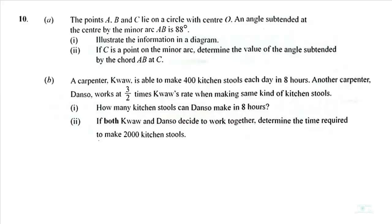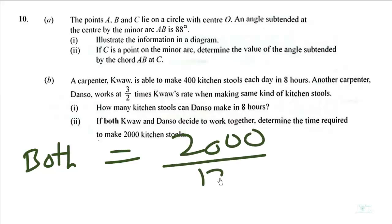So to know how many hours it will take both to make 2000, we divide 2000 by 125. That will be equal to 16 hours. So it will take both of them 16 hours.